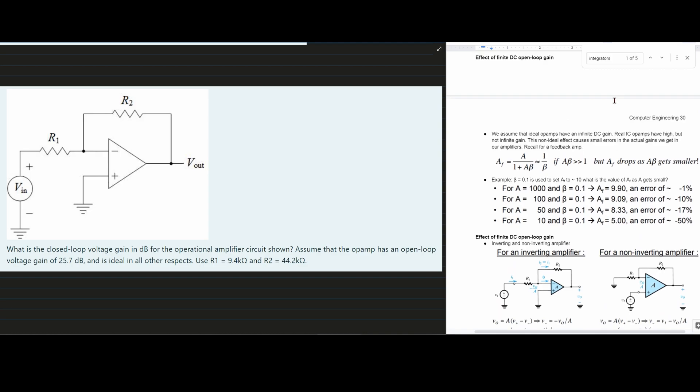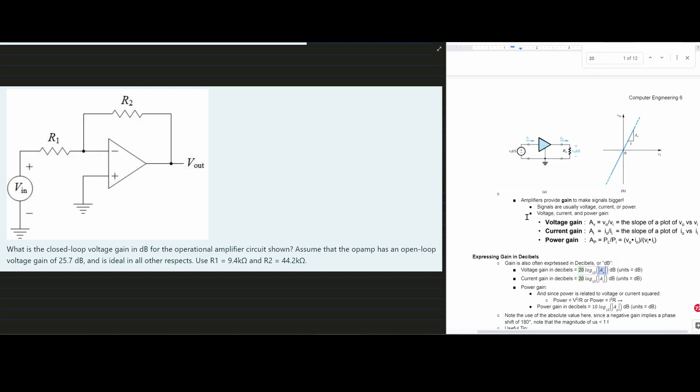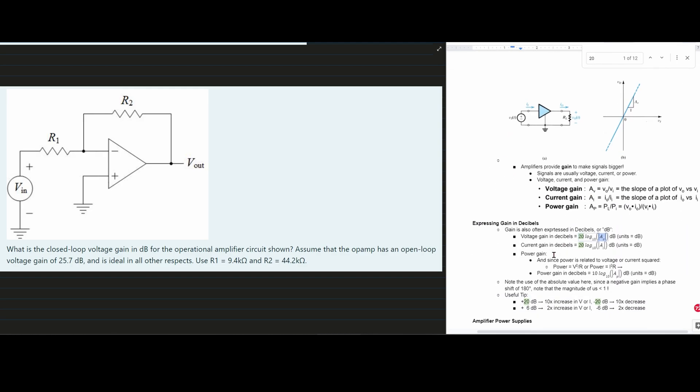this is on page 30. If we look at the ones on page 6, though, we can see that this is how we find our voltage gain. And we want to find the closed loop voltage gain. That's what it's asking us. And the closed loop voltage gain is going to be the voltage gain in decibels that we have right here.